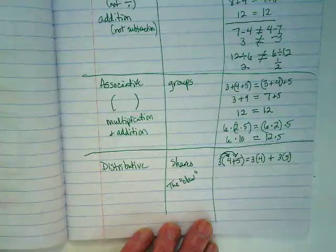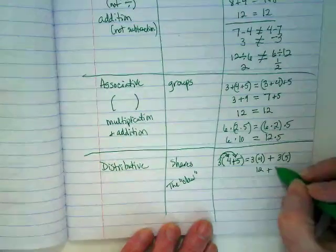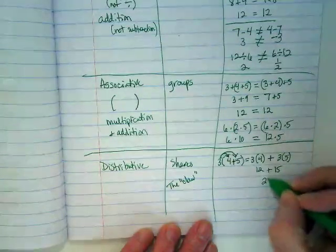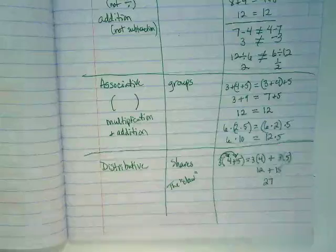What's 3×4? 12. What's 3×5? 15. Does that equal 27? Yes. So our mental math earlier lets us know this method worked.